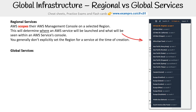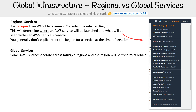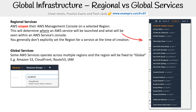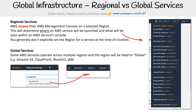Then there's the concept of global services. Some AWS services operate across multiple regions, and the region will be fixed to the word 'global.' For these, that's services like S3, CloudFront, Route 53, and IAM. So if you were to go over to CloudFront and go into the CloudFront console, you'll notice that it will just say 'global,' and you can't switch out of that.